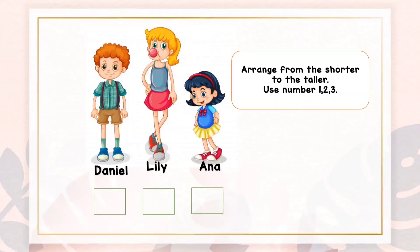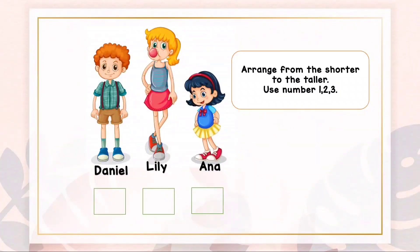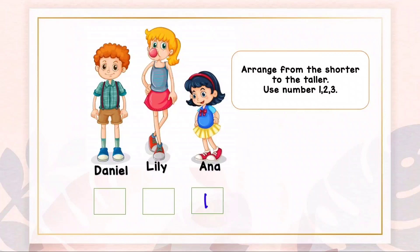Let's do this exercise. Arrange from the shorter to the taller. Use numbers one, two, and three. Firstly, choose the shorter — who is shorter? Yes, Anna is shorter, so we write her as number one. Next, who is taller than Anna?